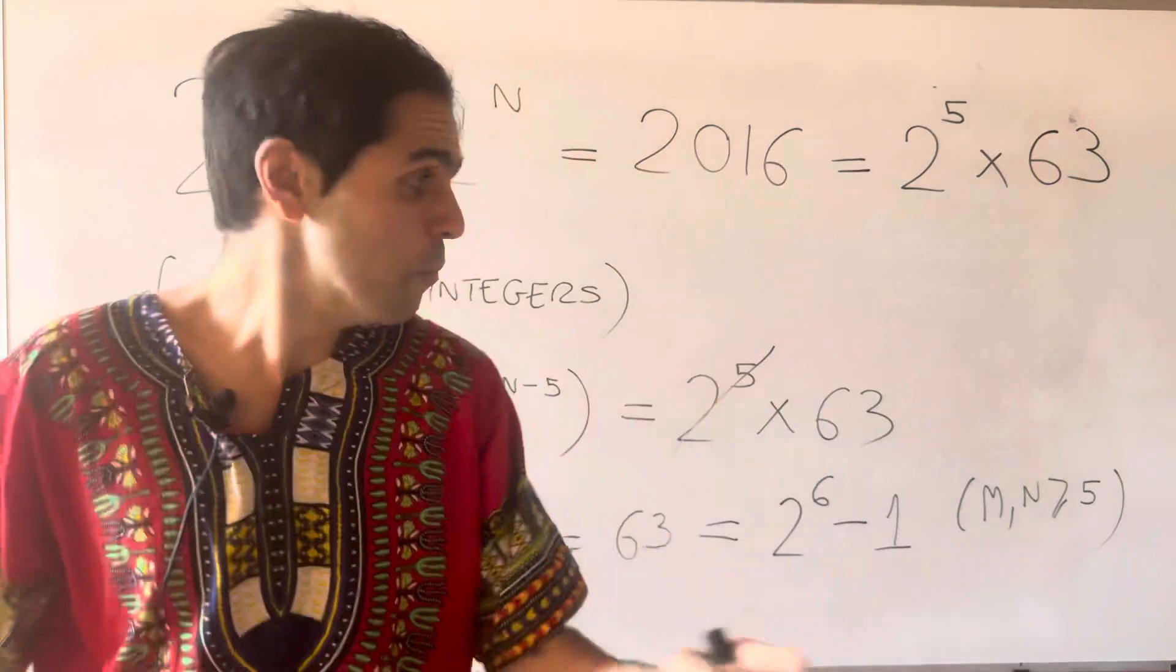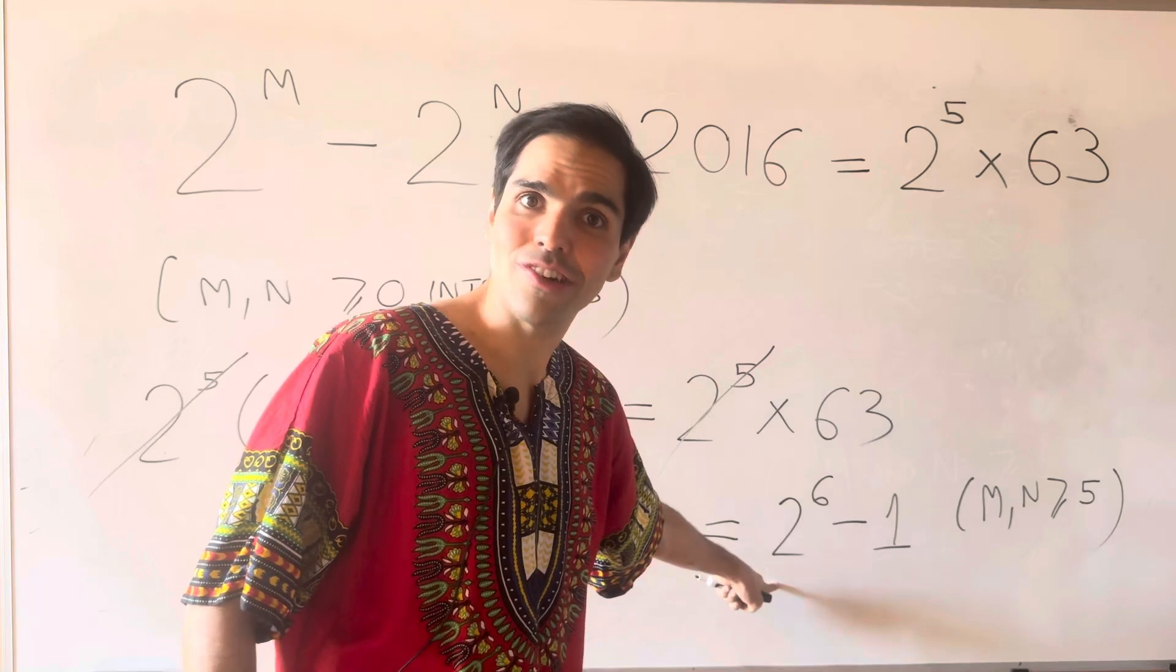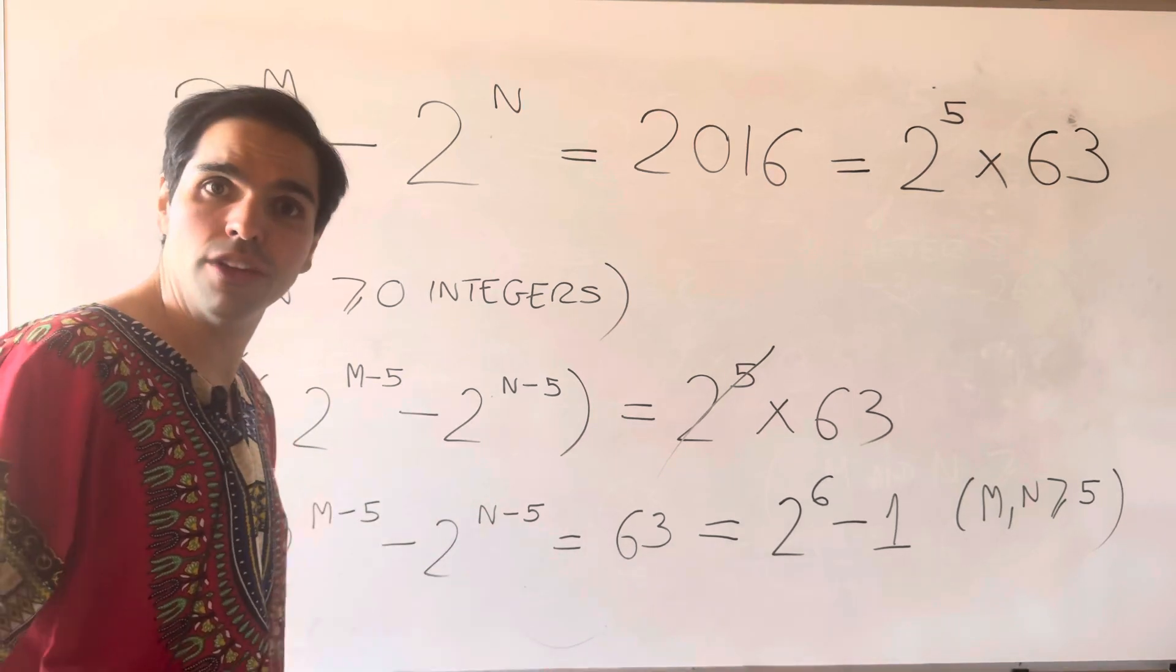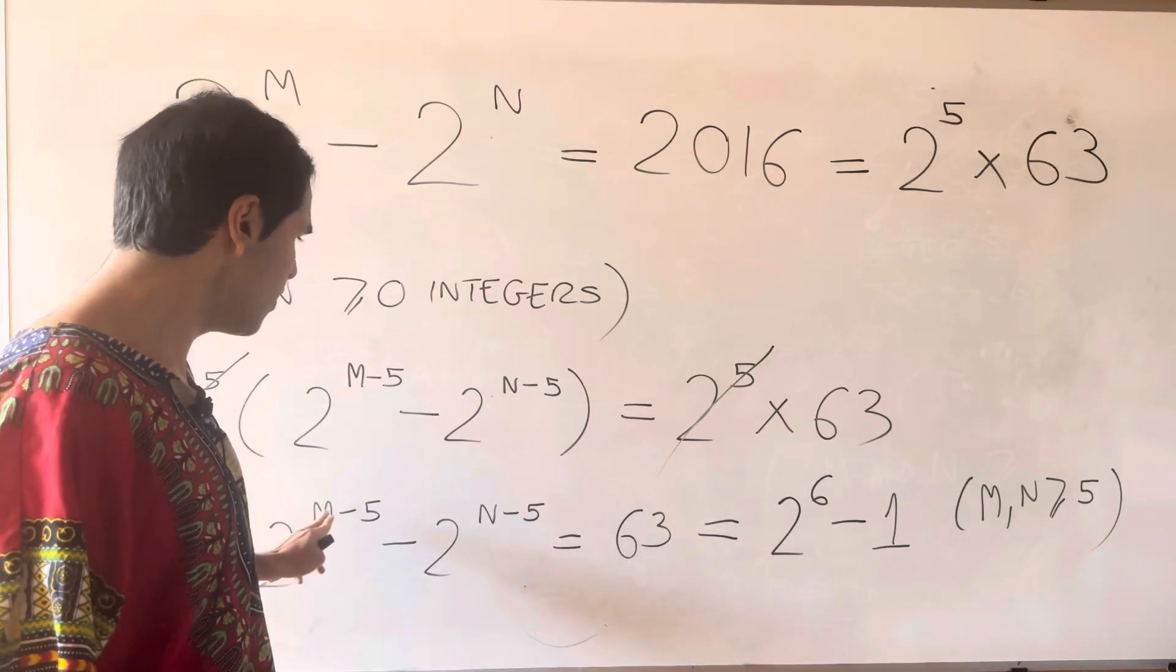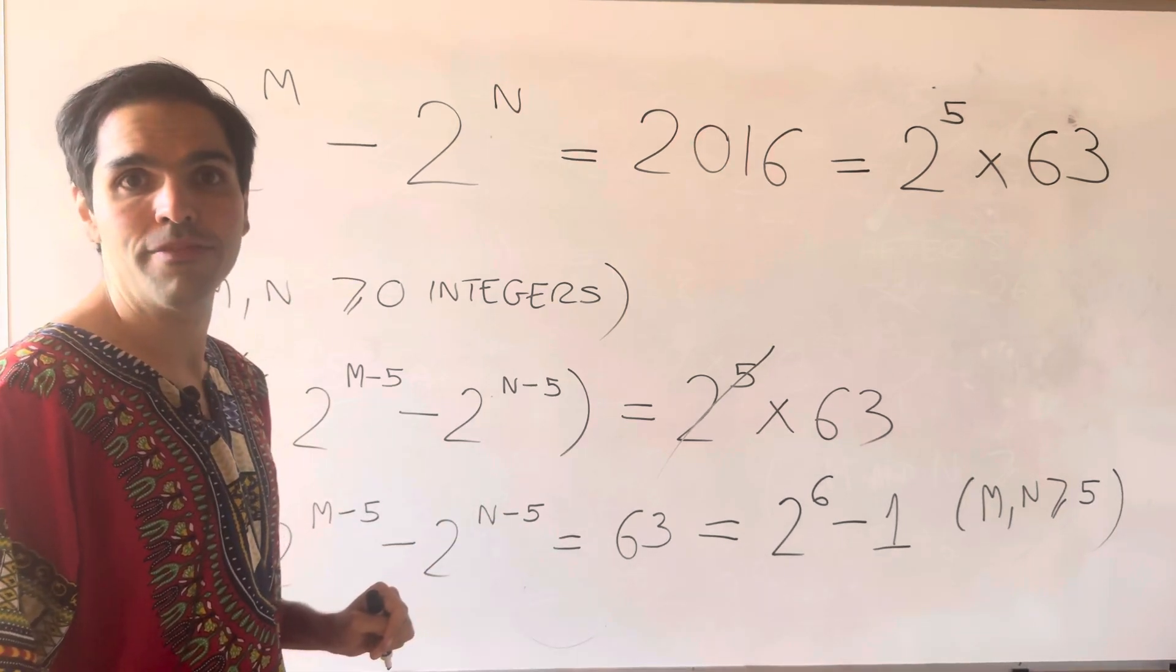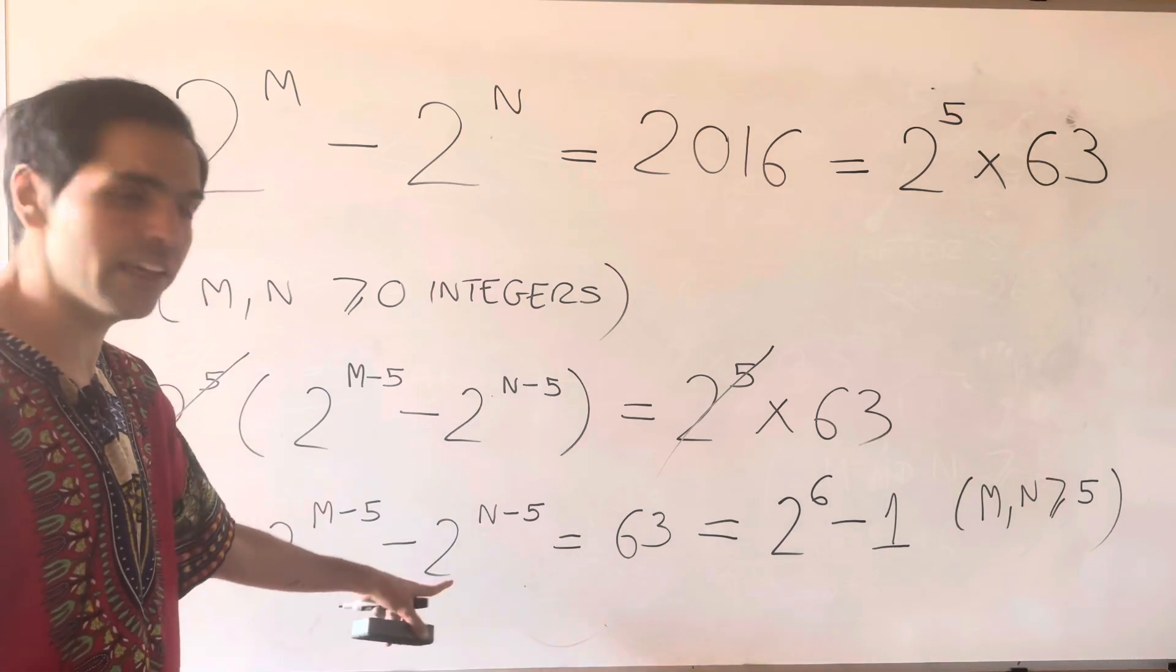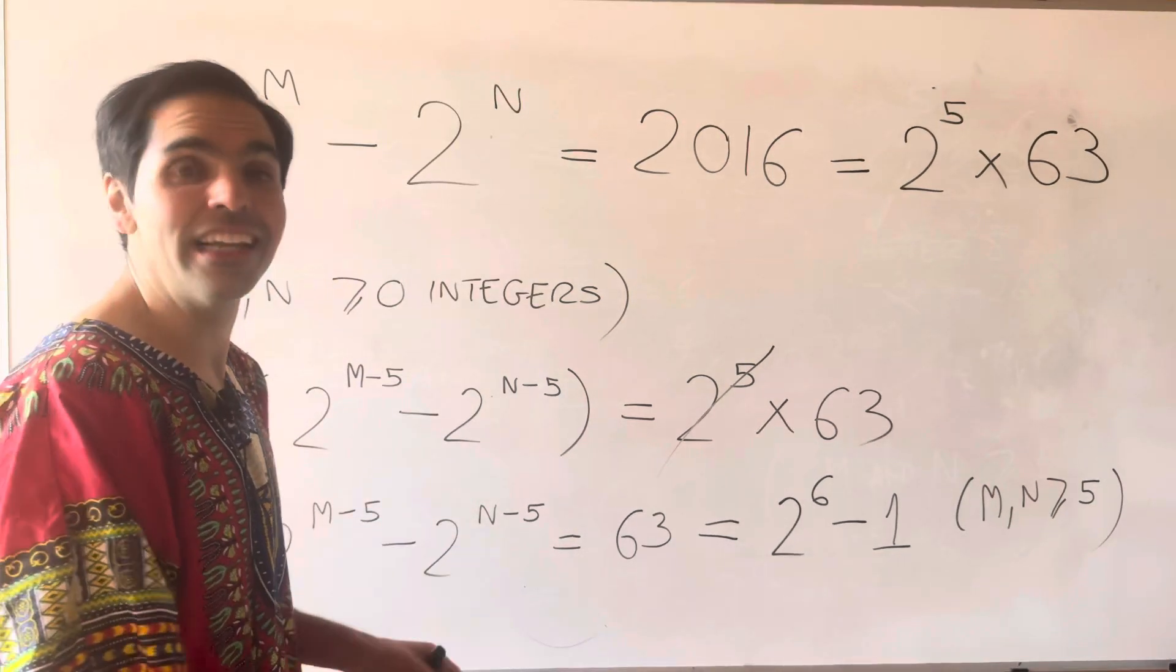Now, moreover, notice this is an odd integer. So in particular, if m and n are strictly greater than 5, then we would get something even. So what this is telling us is that either m has to be 5 or n has to be 5. However, if m is 5, we get something negative, which is not a big issue here. So in particular, we get n equals 5.